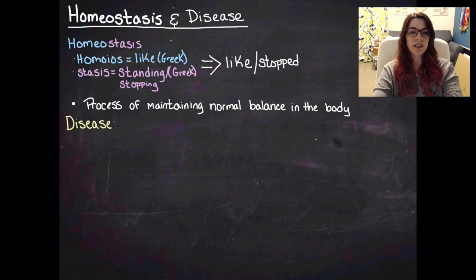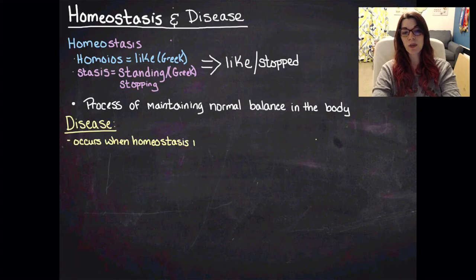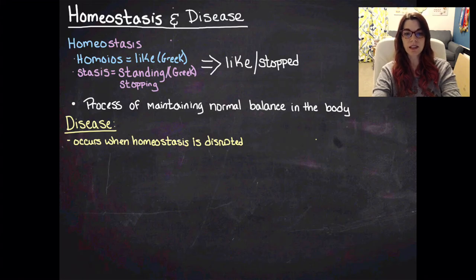So what does that have to do with disease? What it has to do with disease is that disease occurs when homeostasis is disrupted. So we actually say when you have a homeostatic imbalance, that's when disease occurs.